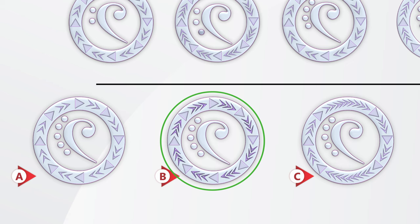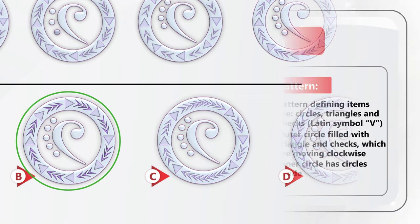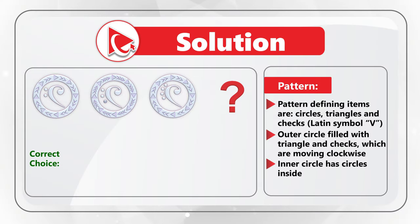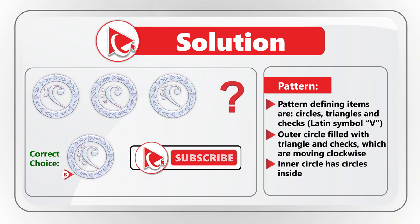Let's look at why other choices are incorrect. Choice A only has 2 checks in between triangles. Choice C has a pattern of 9 checks in between 2 triangles at the top and bottom. And choice D has a pattern of 2 triangles going one after another in between the checks. Please share any better solutions in comments. If you're getting ready for the test, check the links in the description for additional resources.